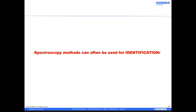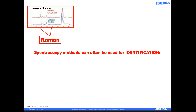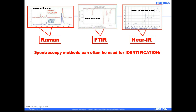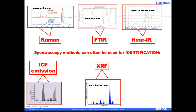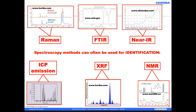There are many different types of spectroscopy which can be used for identification of materials and molecules. Raman, infrared, and near-infrared vibrational spectroscopy, ICP emission, and other atomic spectroscopies, X-ray fluorescence, and NMR are used for identifying chemical functional groups or specific atoms by sharp peaks depending on the technique. They are all very useful, of course.